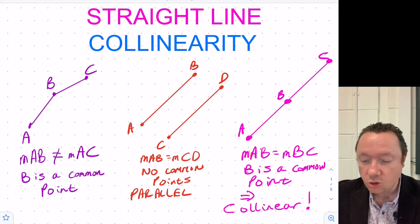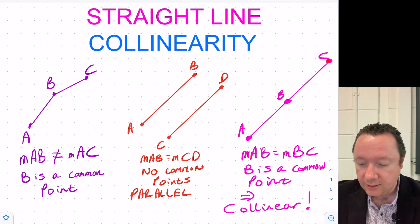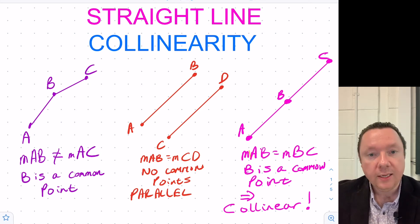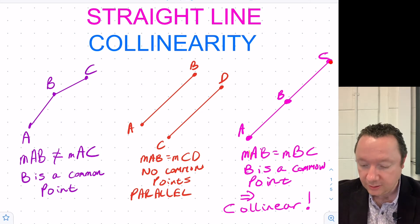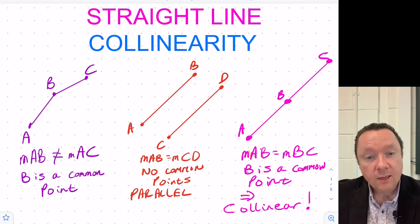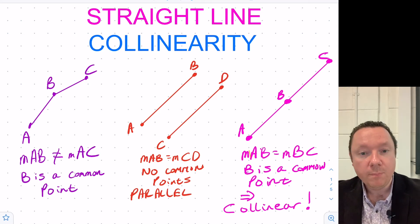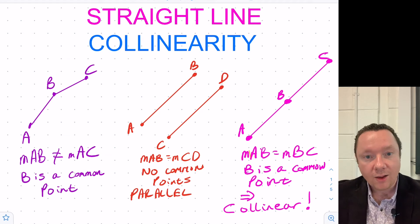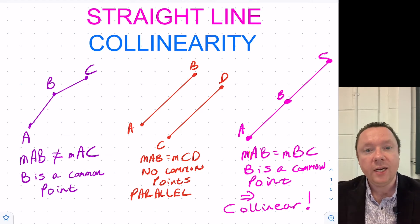However, I could draw three points on a straight line — A, B, C — and clearly the gradient between any two points is the same. The gradient between A and B is the gradient between B and C. Essentially, A to B and B to C are parallel, but since B is a point in both lines, they must be on a straight line, so they're collinear.